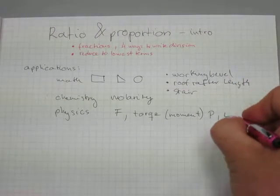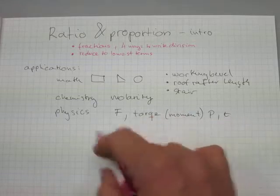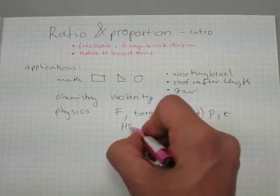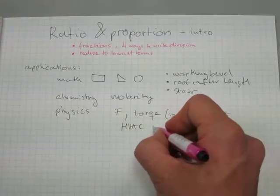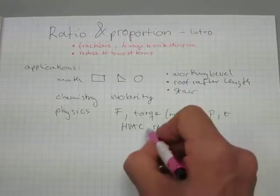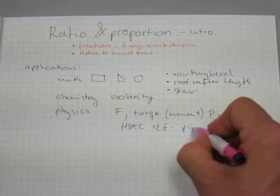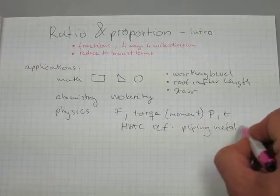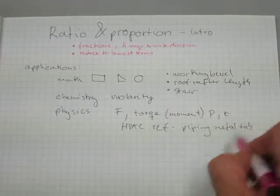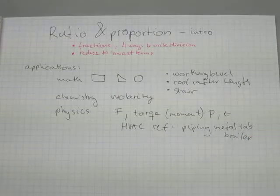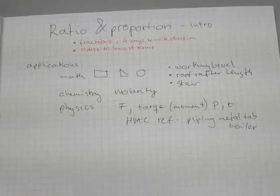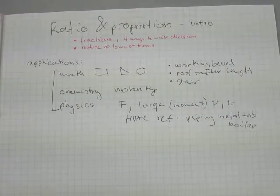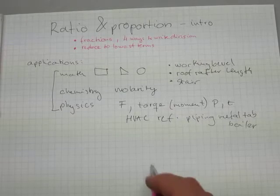Pressure, temperature, and the trades where these quantities are used are the HVAC trades and refrigeration, piping and steam fitting piping trades, metal fabrication, and boiler making. Those are just a couple of examples. These three areas are sciences and applied science where ratio and proportion is used extensively.